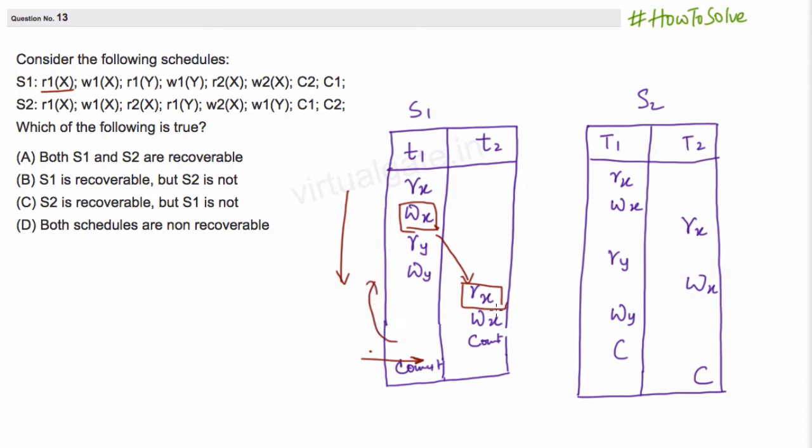Now this transaction T2 which has used this value is already committed, so it cannot be recovered. This wrong data has been already committed, has been already read and used. This whole schedule is not recoverable because if transaction fails here at this point we cannot recover the data as this has been already committed.